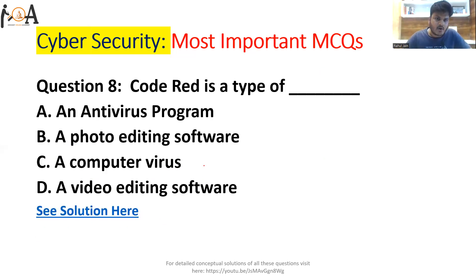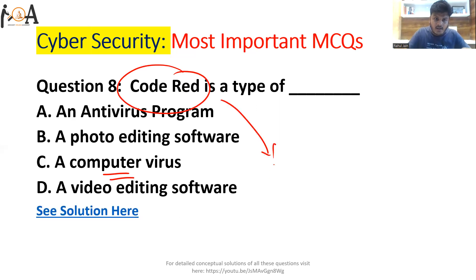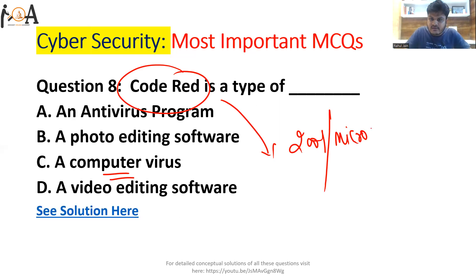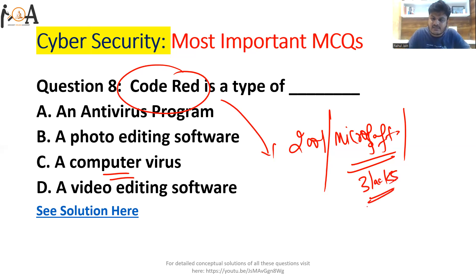Question number eight: Code Red is a type of — antivirus? No. Photo editing software? No. Computer virus? Yes. Code Red is a kind of computer virus that was discovered in 2001. It attacked Microsoft servers in 2001 and within a couple of days had compromised more than 300,000 servers. So it is a computer virus.